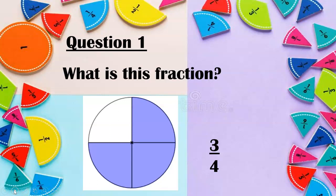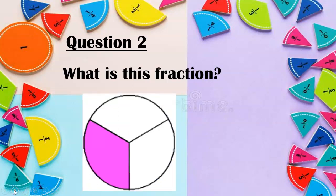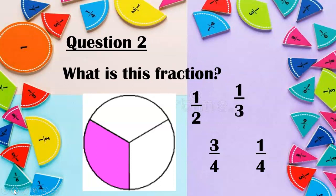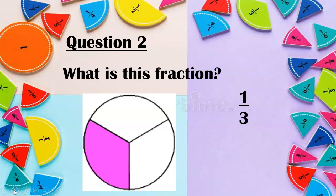There are three purple sections and four all together. Question two. What is this fraction? Is it a quarter? Is it three quarters? Is it a half? Or is it a third? How many are shaded? It's not a quarter, not three quarters. Well done if you said a third. There's one pink piece coloured and three all together.